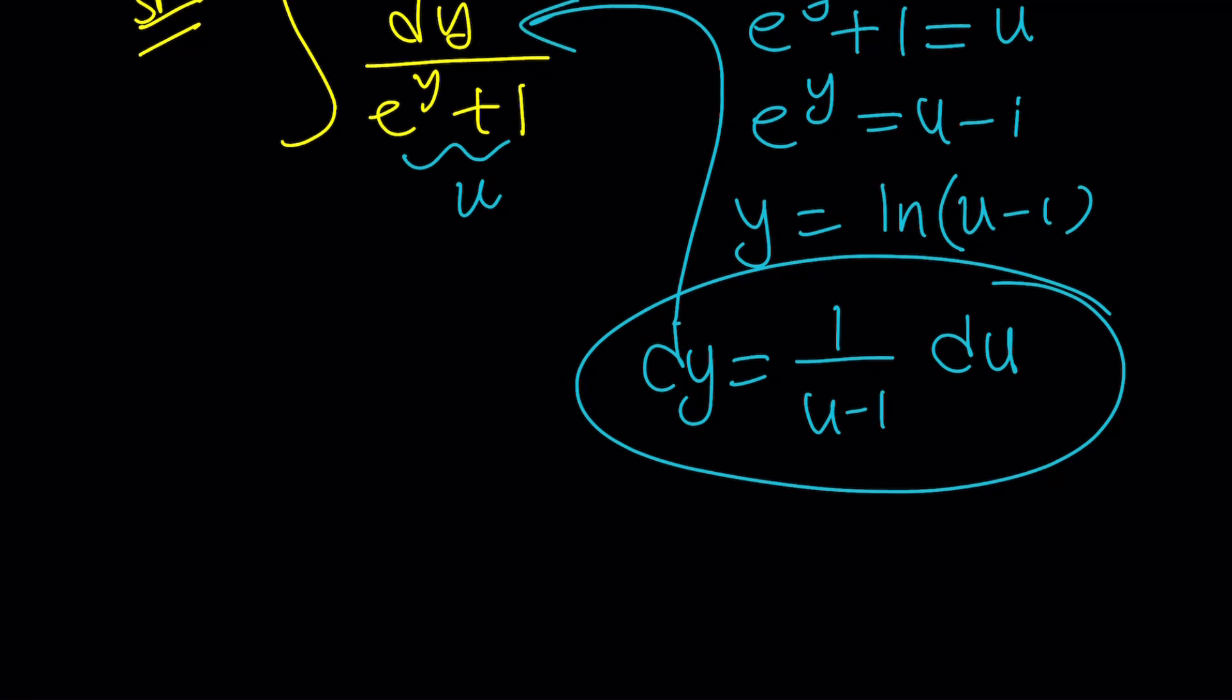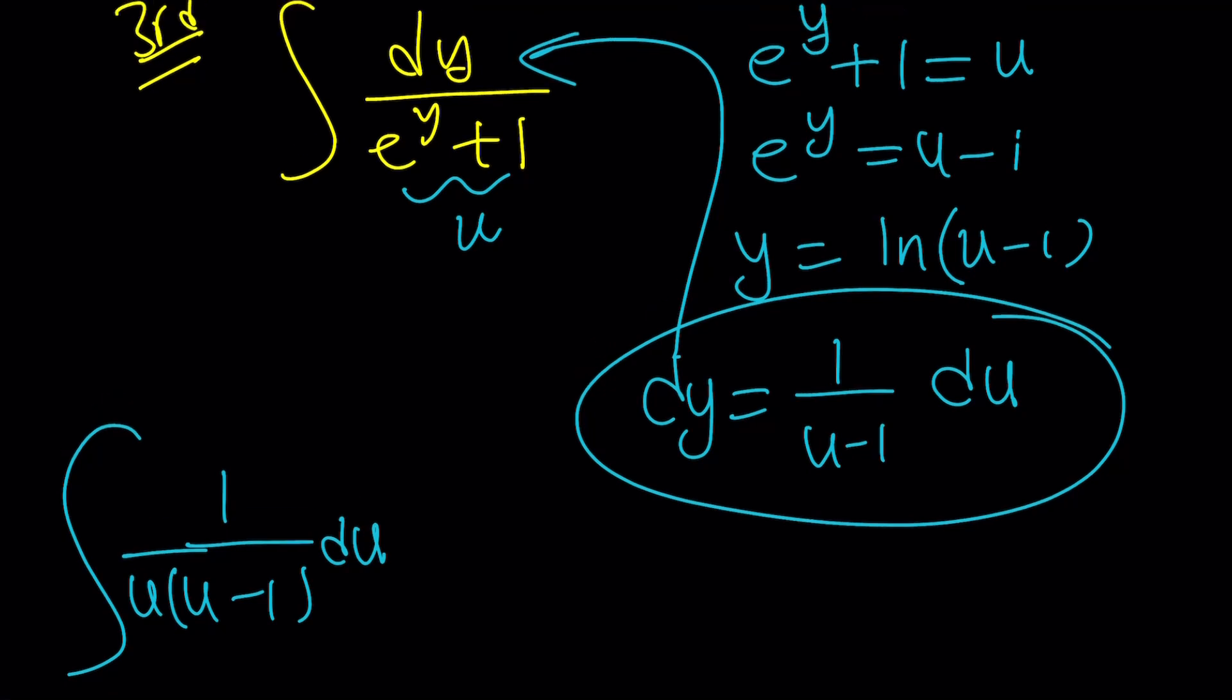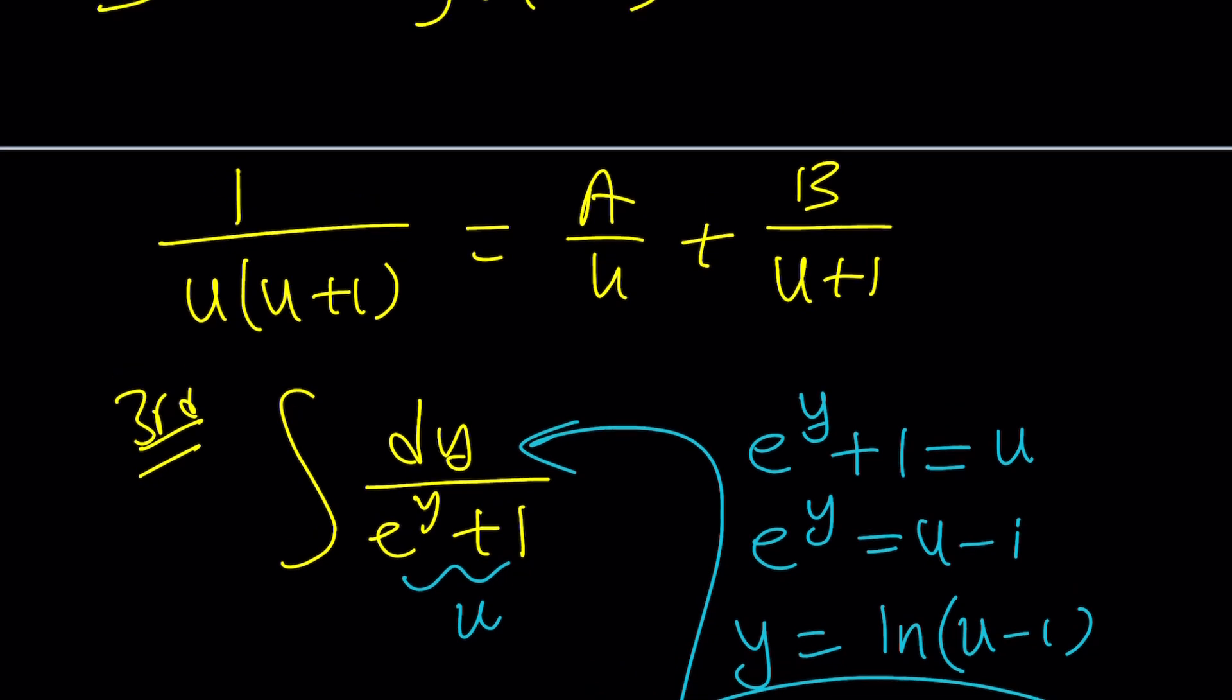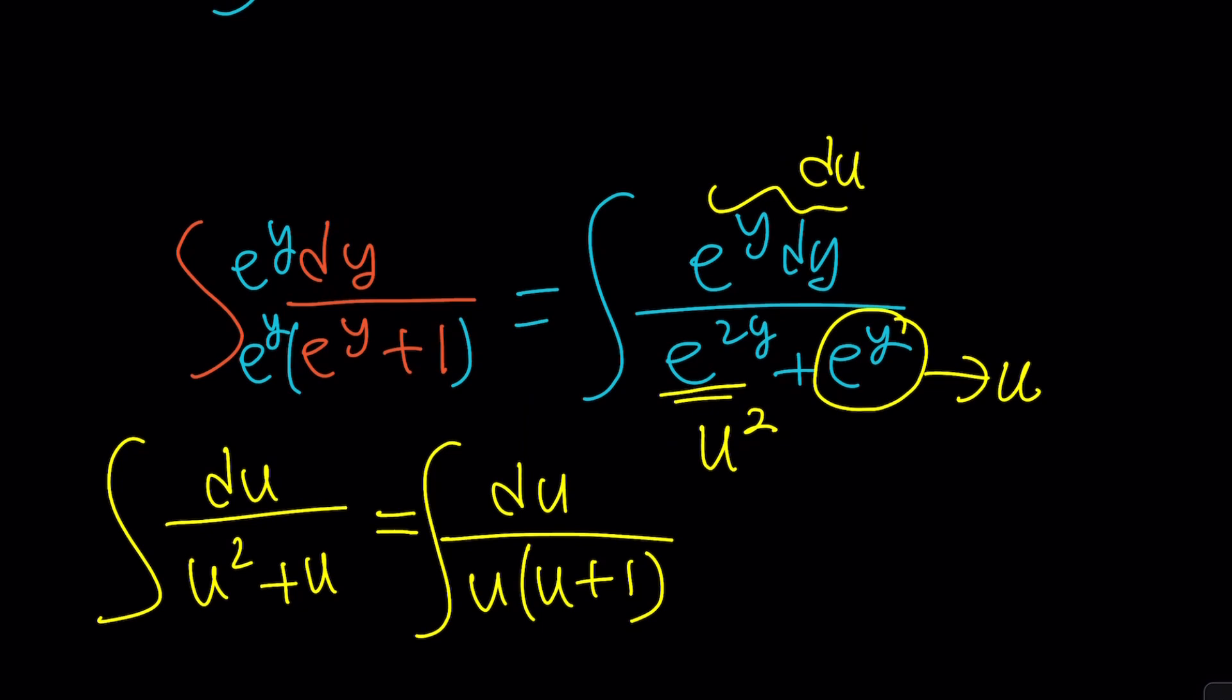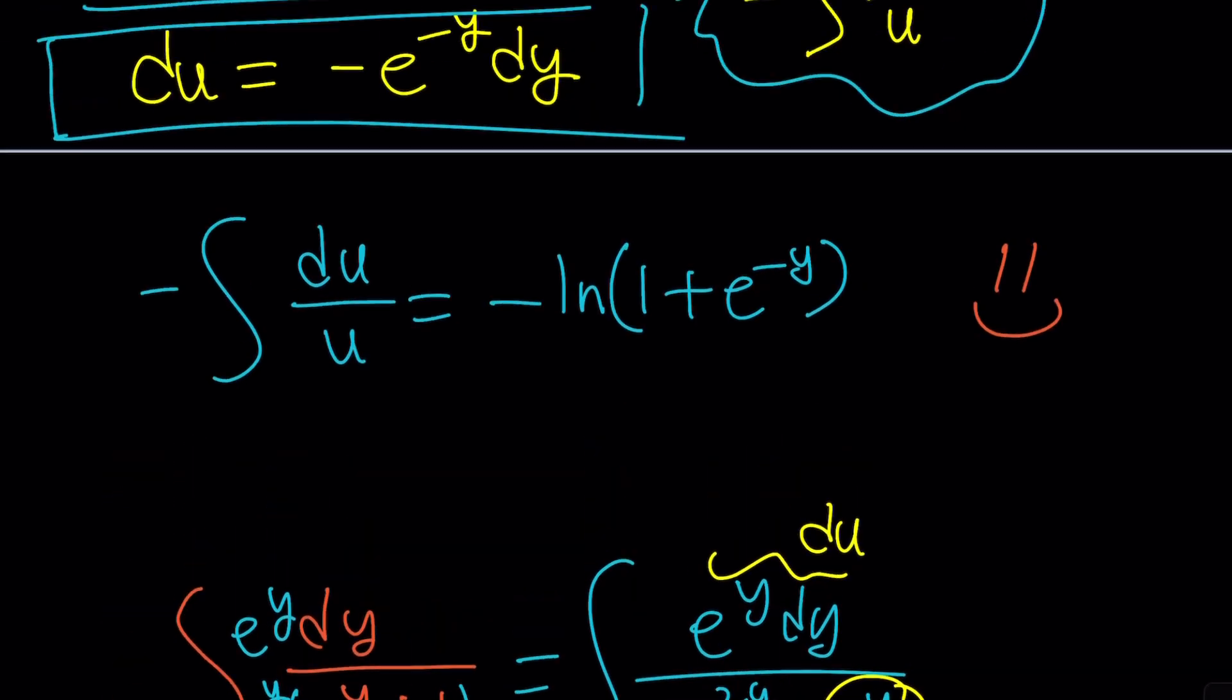You get 1 over u minus 1 du divided by u, but you can just put that, insert that little u here, and u will get the answer from here. But notice that this is also partial fractions with a slight difference. u squared minus u, separate it. You'll get the same answer, but u is this time a little different because e to the y plus 1. Make sense? That's why it's a little different. So let's go back and see what we get with this equation.